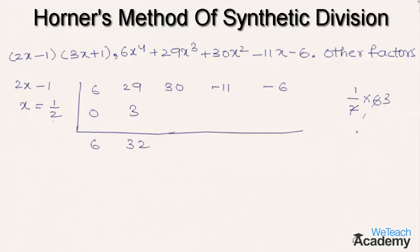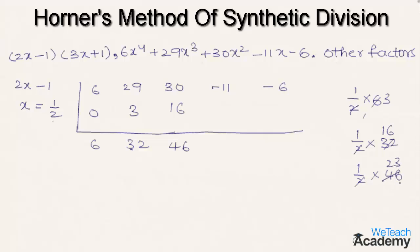Now let us multiply 1/2 with 32: 2×1=2 and 2×16=32, so the result is 16. Writing this below the third coefficient, 30 + 16 = 46. Multiplying 1/2 with 46: 2×1=2 and 2×23=46, giving 23. Writing this below the coefficient of x (-11), we get -11 + 23 = 12.